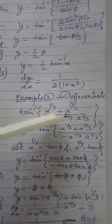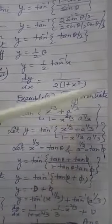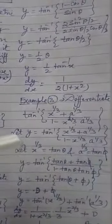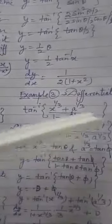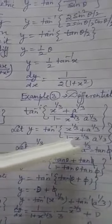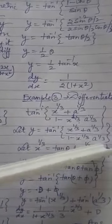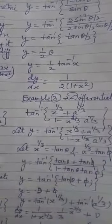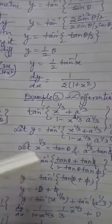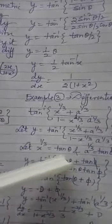Third example: sometimes we need to take two substitutions. Differentiate tan⁻¹((x^(1/3) + a^(1/3))/(1 - x^(1/3)·a^(1/3))). Let y = tan⁻¹((x^(1/3) + a^(1/3))/(1 - x^(1/3)·a^(1/3))). We take x^(1/3) = tan θ and a^(1/3) = tan φ.